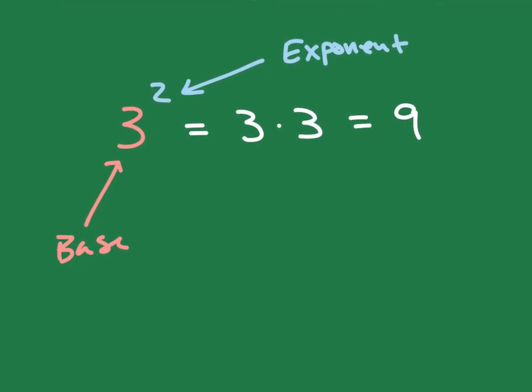Now to extend off of that idea, let's say that we have 2 to the third power. So 2 cubed, we can also call it that, would be 2 times 2 times 2. And 2 times 2 is 4 times 2 again, gives us 8. So that's the idea. Exponents provide us with repeated multiplication.